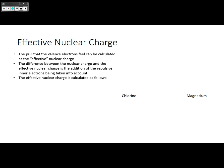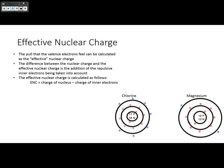The effective nuclear charge is calculated as follows: the ENC or effective nuclear charge is equal to the charge of the nucleus minus the charge of the inner electrons. So for example, here are two pictures of chlorine versus magnesium. Chlorine having 17 protons and 18 neutrons and 17 electrons. Magnesium having 12 protons, 12 neutrons, and 12 electrons.